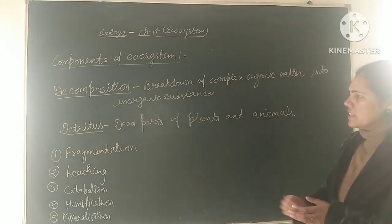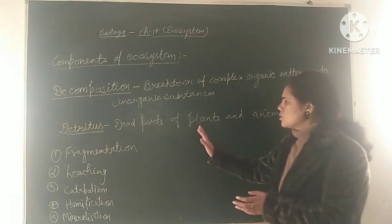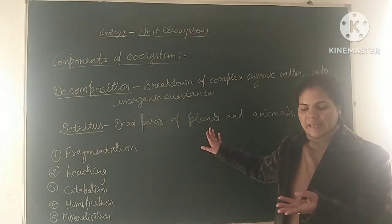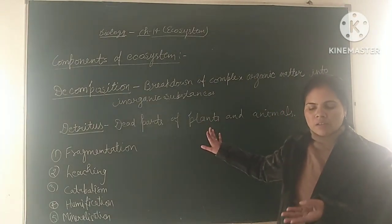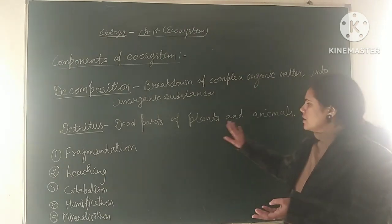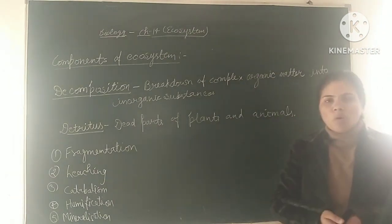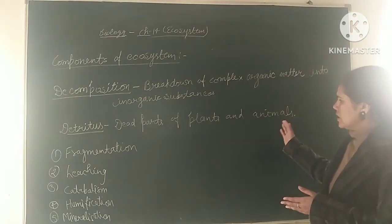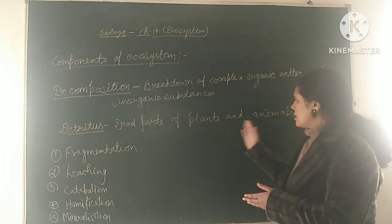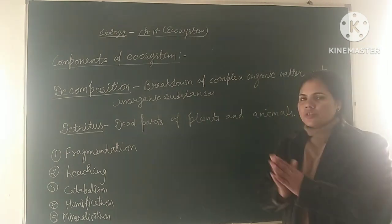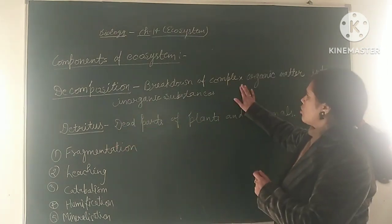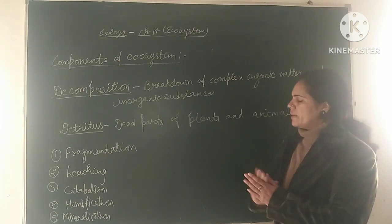What is detritus? It is the dead parts of plants and animals. The dead parts of plants like bark and leaves, and the dead parts of animals like bones and teeth. These dead parts of plants and animals constitute detritus. Detritus contains many complex organic matter.